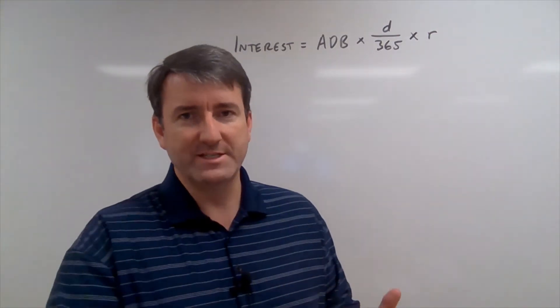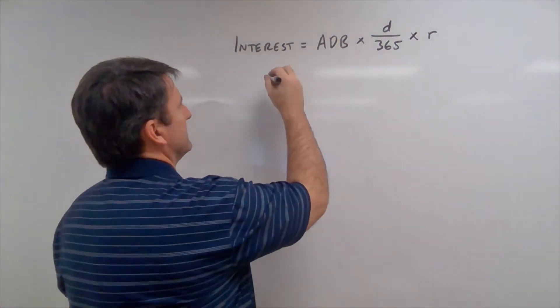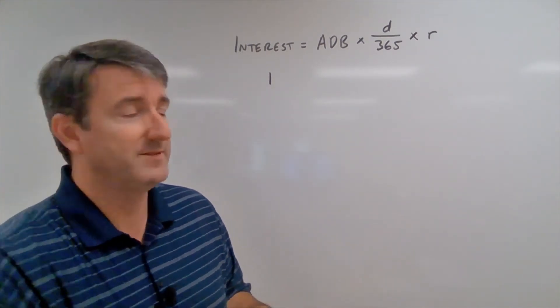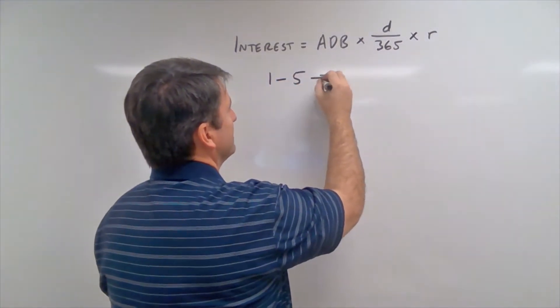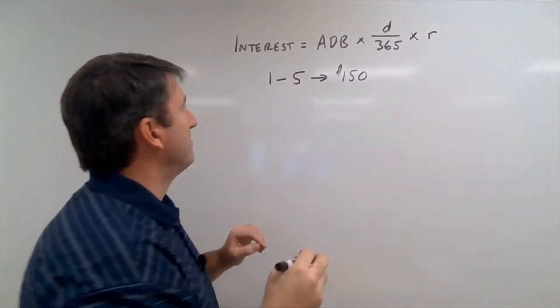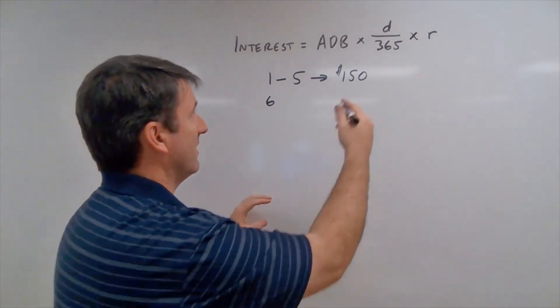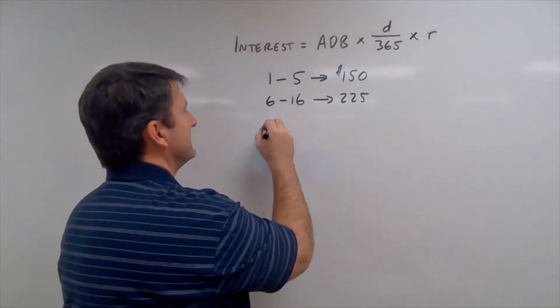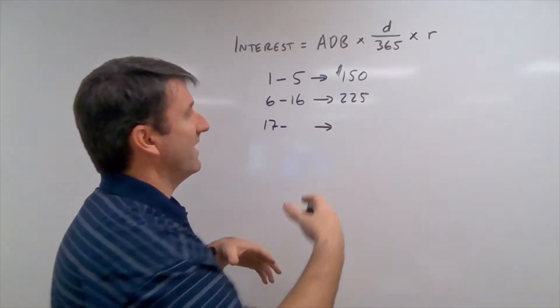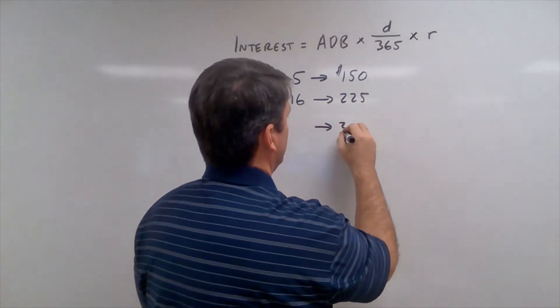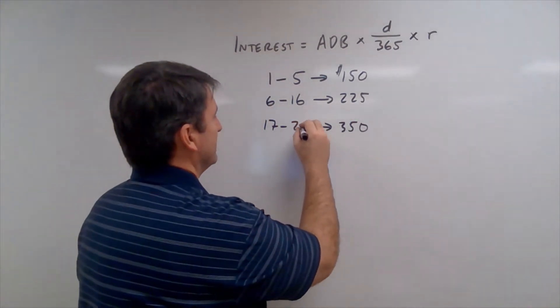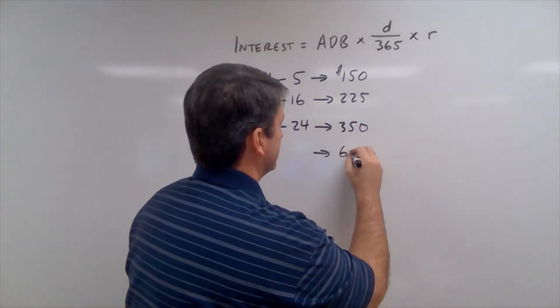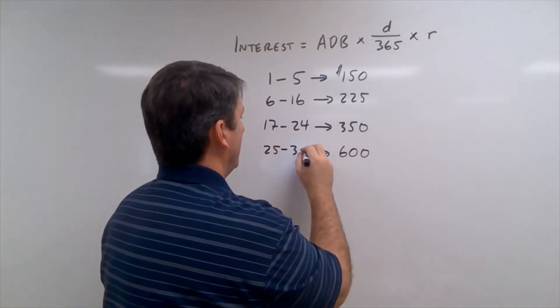So the first thing we need to do is calculate the average daily balance for this month. On the 1st of the month, we had a balance of $150. And since we didn't charge anything for those first five days, from the 1st through the 5th, our balance remained at $150. Then on the 6th, we charged an extra $75, so our balance went up to $225. And that continued until the 16th. Because then on the 17th, we charged another $125, so our balance went up to $350. And that continued until the 24th, because on the 25th, we charged an extra $250. So that brought our balance to $600, and that continued until the 31st.